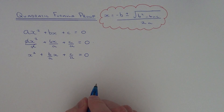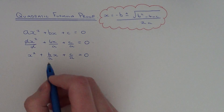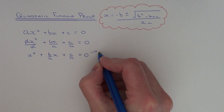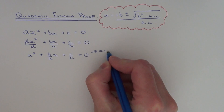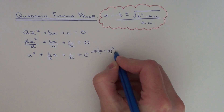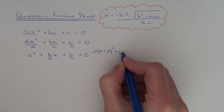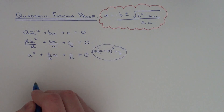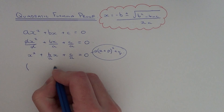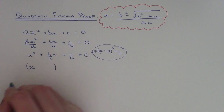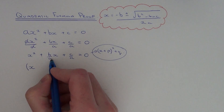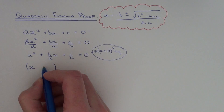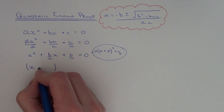This is the key step. What you have to do is write the quadratic in the form x plus p, all squared, plus q — so we're completing the square on this quadratic. The first term in the bracket is x, and then we're going to take half of this coefficient here, so it will be b over 2a.